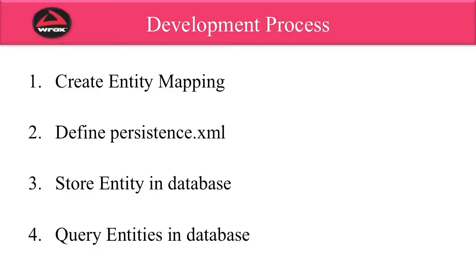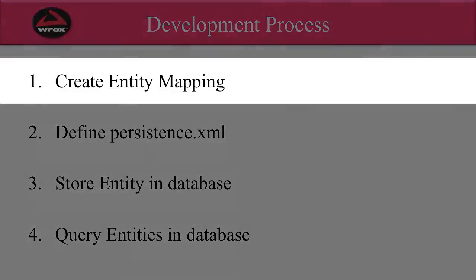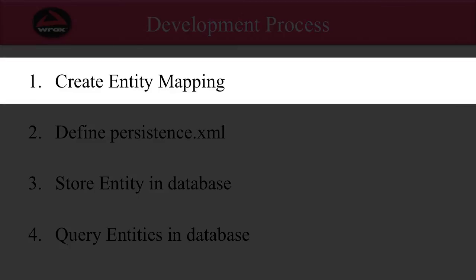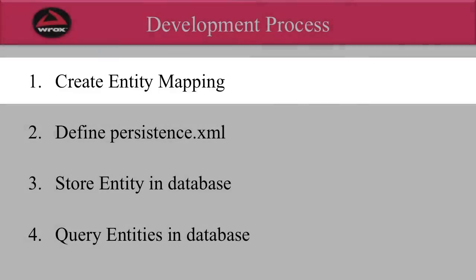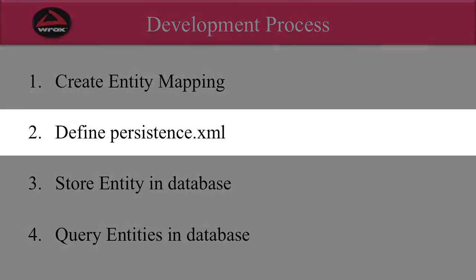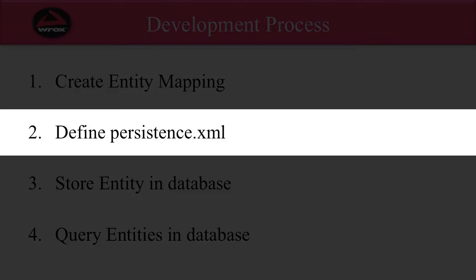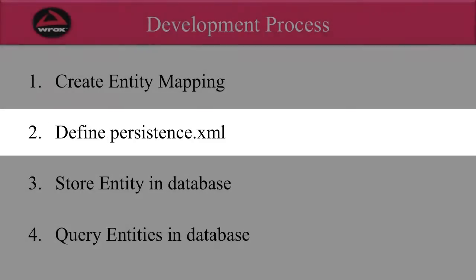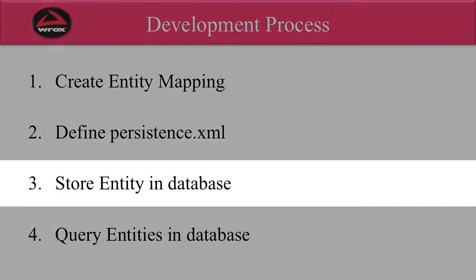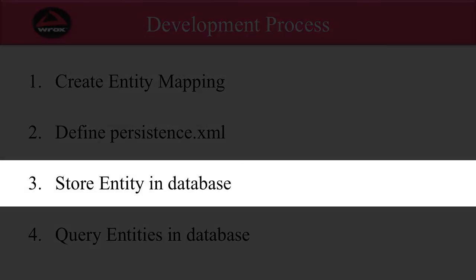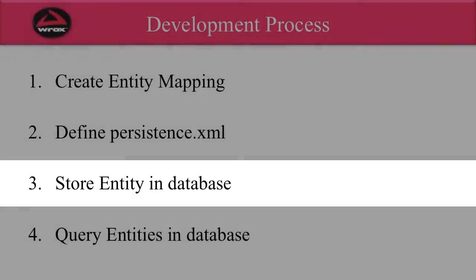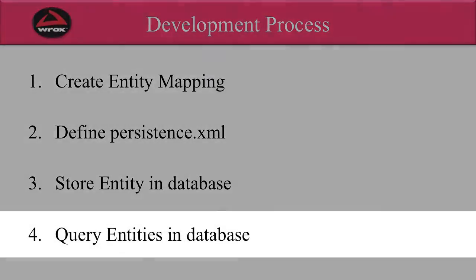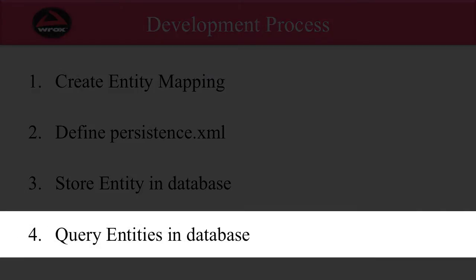Let's look at the actual development process with JPA. The first step is you'll create the entity mapping. Then from there, you'll define a Persistence XML. Next, you store your entity in the database. And finally, you can query the entities from the database.